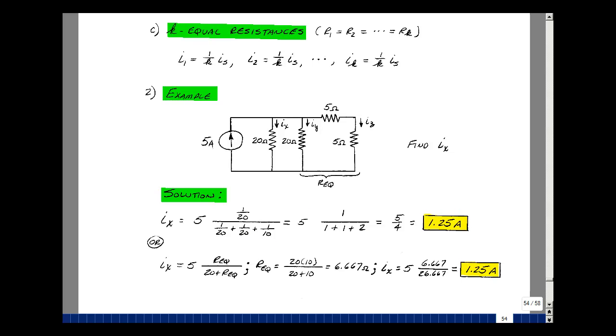Now let's use this special case. Let's combine this into one resistance. So I have 10 ohms parallel with 20, product over the sum is 6.667. With the current I sub x, it's going to be this equivalent resistance divided by that resistance plus 20 times the 5 amps. So you've got 5 times 6.667 divided by 26.667, and that's also 1.25 amps.